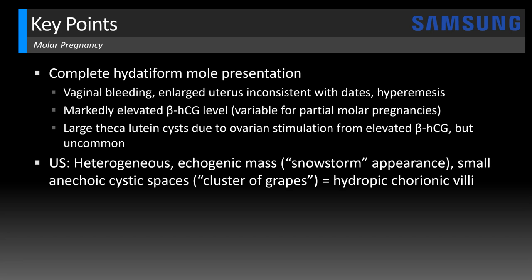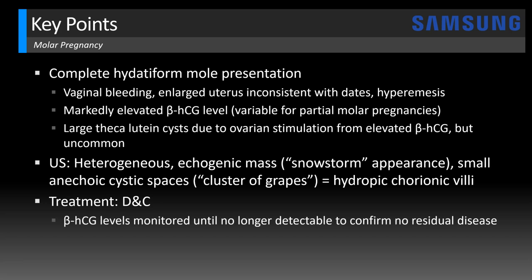That cluster of grapes appearance is due to hydropic chorionic villi. Treatment is typically dilation and curettage to preserve fertility, usually performed under ultrasound guidance to limit the risk of uterine perforation. After the procedure, it's important to monitor beta-HCG levels until they're no longer detectable, because that's how you can confirm there's no residual disease, such as gestational trophoblastic neoplasia.